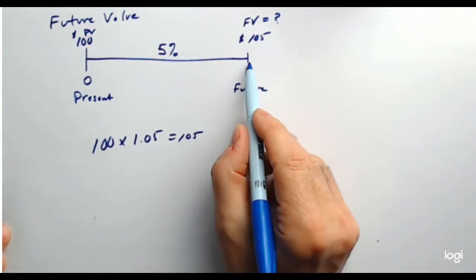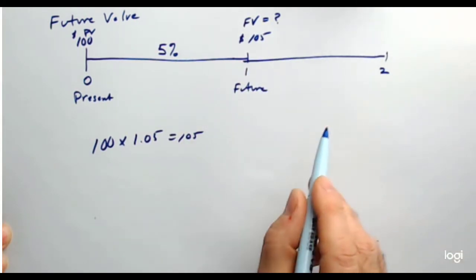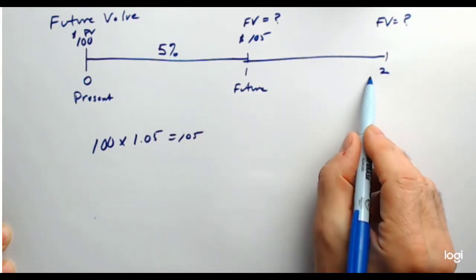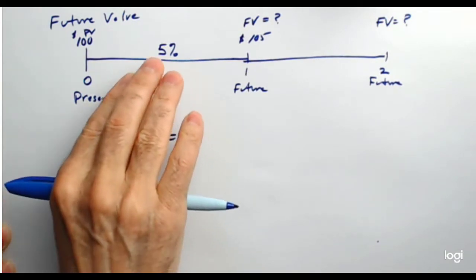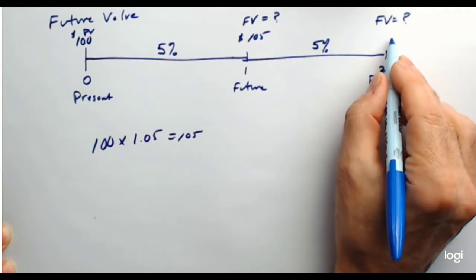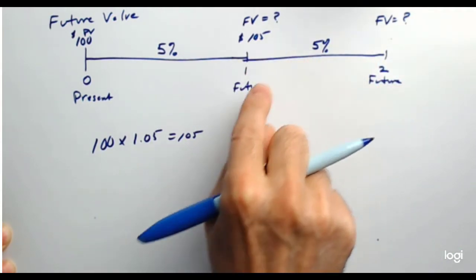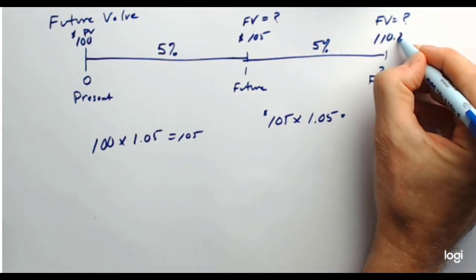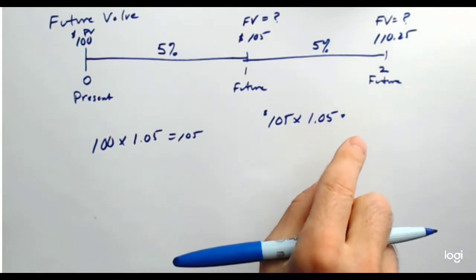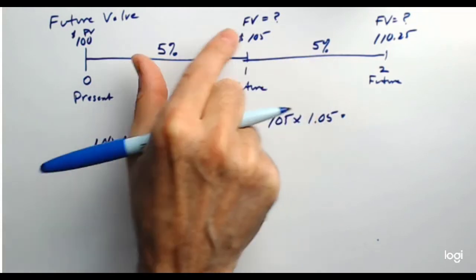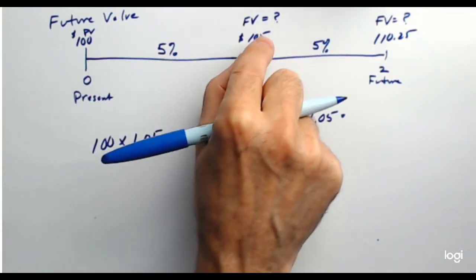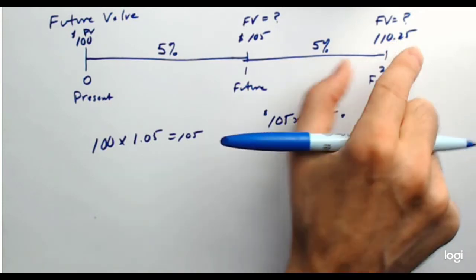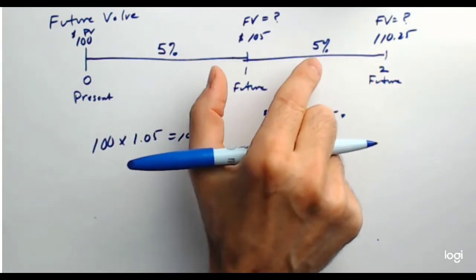What happens if you have two periods? Here's a second period. What's the future value after two years? You're going to earn 5% in each period. You take $105 and multiply it by 1.05, and you come up with $110.25. You basically earned a little more than 10% over the two-year time frame — 5% here and 5% here. It compounded. You got a little extra compounding on that $5 at 5%, which accounts for the extra $0.25. If you had just earned a flat 10% for the whole time period, you wouldn't have had that extra compounding.